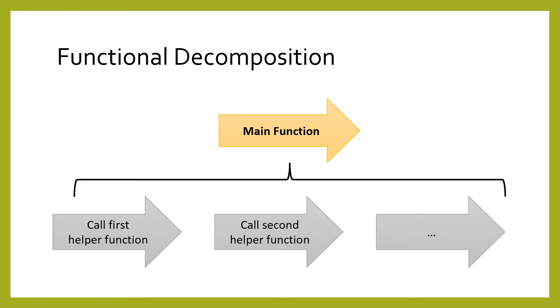Earlier, we learned to break up complex functions into multiple parts using functional decomposition. With loops, we finally see why that becomes necessary. The control flow for a function within a loop is complicated.